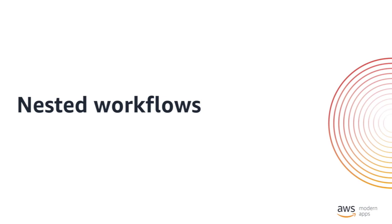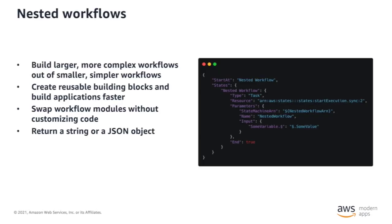Looking at additional capabilities added to Step Functions in recent years: the first is nested workflows, introduced in August 2019. Nested workflows allow you to build larger, more complex workflows out of smaller, simpler workloads — known as workflow composition. You can create small building blocks of commonly executed tasks and assemble those across different applications. Using this declarative model you can swap workflow modules without writing custom code. A second version was recently added, returning a JSON object that enables you to parse and drill down to various fields within the returned object and make decisions about future states based on those values.